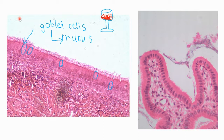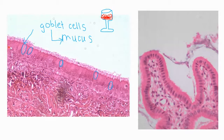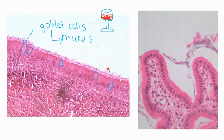To answer Sarah's question — yes, goblet cells are only found in columnar epithelium, that is correct. So we've got the cilia up here, the fake-it-till-we-make-it nuclei pattern, and the columnar cells — ciliated pseudo-stratified columnar epithelium on the left.